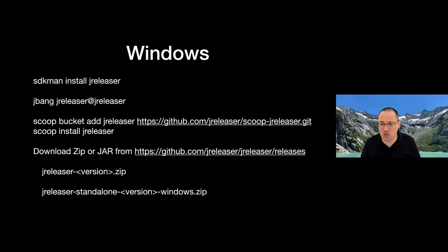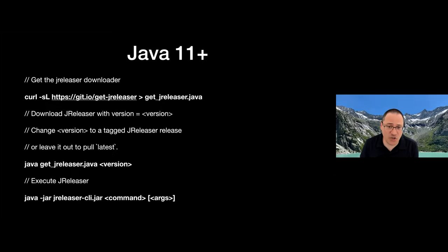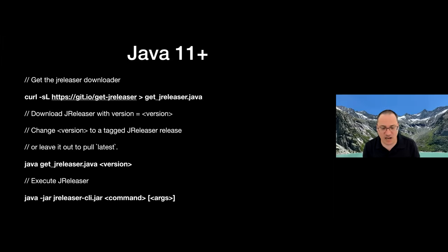On Windows, almost the same options, but you also have Scoop. You might be wondering — these options seem similar. JReleaser happens to be a CLI tool written in Java, just like any other Java project you'd like to release. Does JReleaser use JReleaser to release itself? Yes, since the first release. All these options have been crafted using a model published by a previous version of JReleaser. You can also grab the CLI using an executable JAR, downloadable from the release page, or using a simple script — you need Java 11, which supports launch from source file.